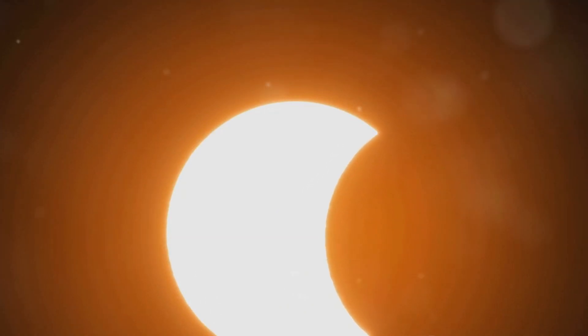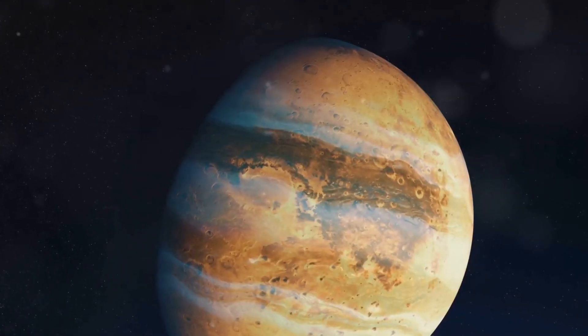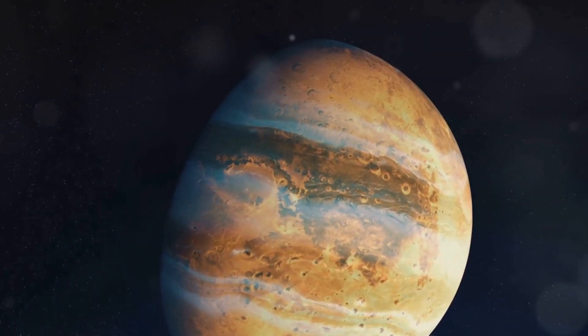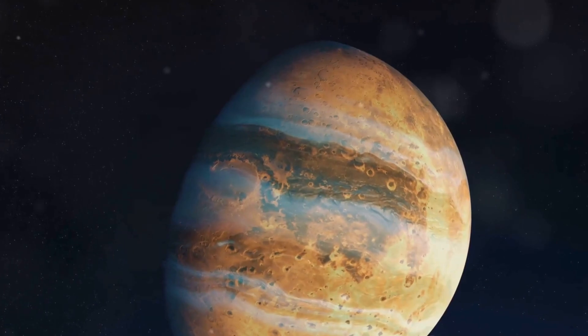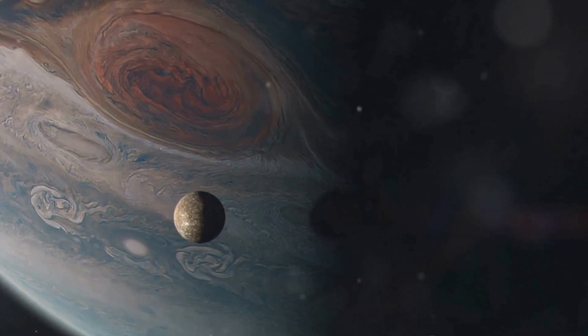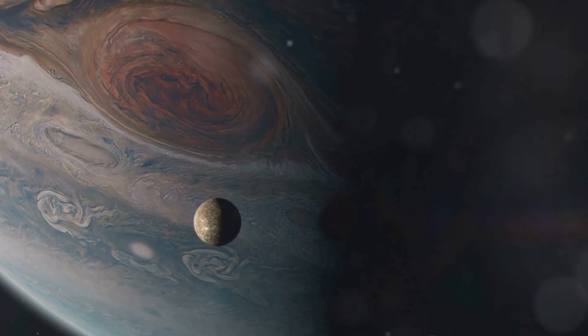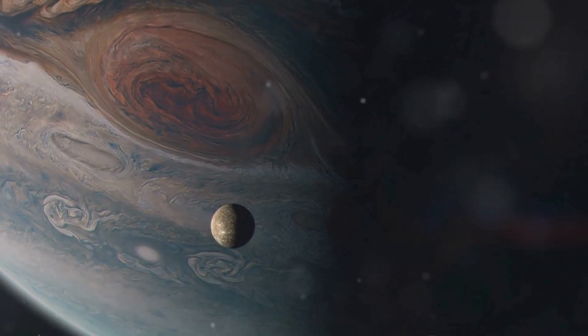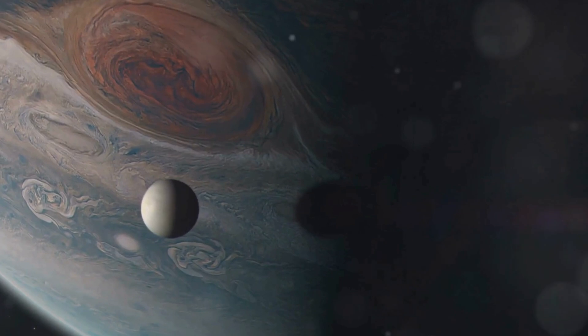Jupiter, on the other hand, offers a cosmic spectacle unlike any other. With its four large moons, it's not uncommon to witness multiple eclipses simultaneously. A triple solar eclipse, where three moons cast their shadows on the gas giant, is a sight to behold, a testament to the complex and intricate dance of celestial bodies.